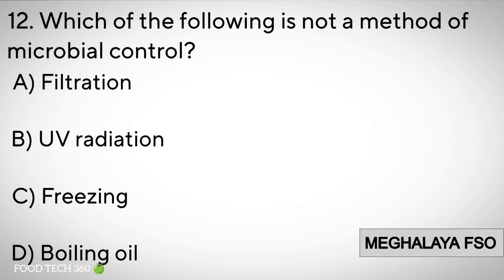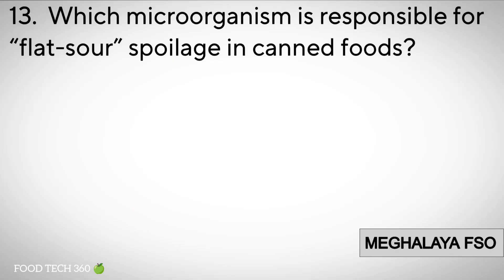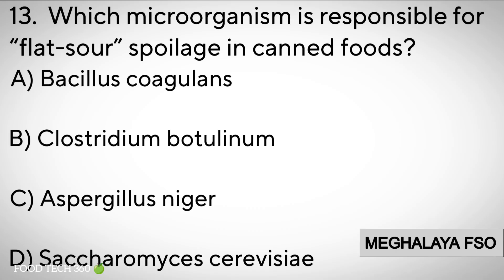Correct answer: D. Boiling oil. Question number 13: Which microorganism is responsible for flat sour spoilage in canned foods? Options: A. Bacillus coagulans. B. Clostridium botulinum.